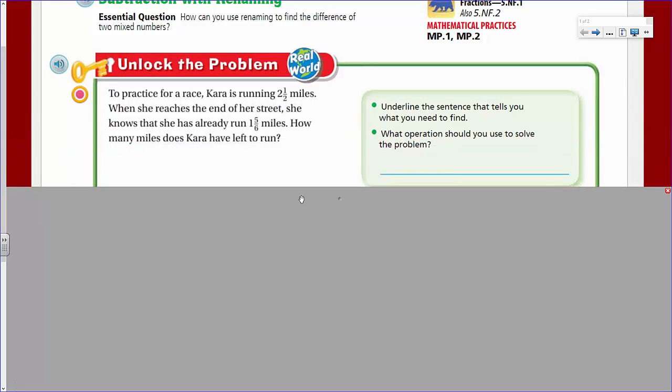We need to unlock that real-world problem, so let's take a look. It says here, to practice for a race, Kara is running 2 1/2 miles. When she reaches the end of her street, she knows that she has already run 1 5/6 miles. How many miles does Kara have left to run? It says underline the sentence that tells you what you need to find, and also says what operation should you use to solve the problem.